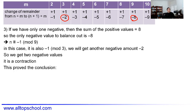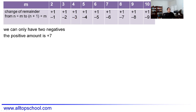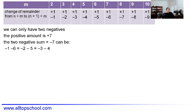With exactly two negative remainder changes, we have seven positive changes (each +1) summing to +7, so the two negative values must sum to −7. The possible pairs are: (−1, −6), (−2, −5), and (−3, −4). We now check each pair case by case.